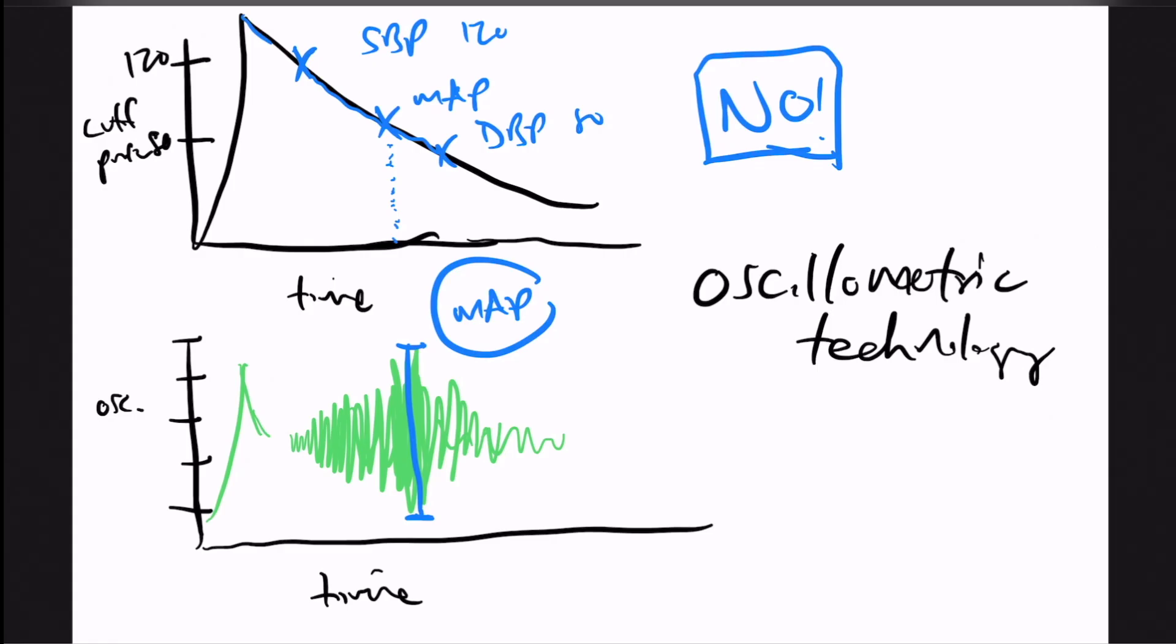This does correlate with the mean arterial pressure that's calculated when you do it via the manual technique. That's pretty cool, right? So the next question is, where in the world does the systolic blood pressure and the diastolic blood pressure come from? Each company that develops these technologies has their own proprietary software and their own proprietary code, which generates a diastolic blood pressure and generates a systolic blood pressure out of thin air, out of their code. That systolic blood pressure is not an exact number.